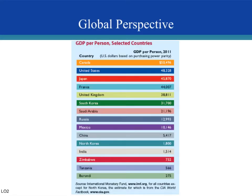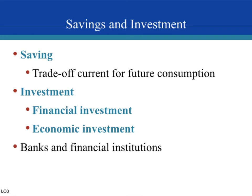To give a bit of perspective, we can look at GDP per person adjusted for US dollars. Countries like Canada, the US, Japan, and France — the United Kingdom — we consider these developed countries. On the other end, countries like India, North Korea, and China we consider developing countries. And then there are middle-income countries such as Mexico and Russia.